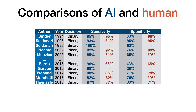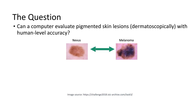So why aren't these algorithms used in clinical practice? One reason is the limitation of these studies to a binary decision — whether something is a nevus or a melanoma. If we remember our initial question, we didn't really care about nevi and melanomas only, but all pigmented lesions.